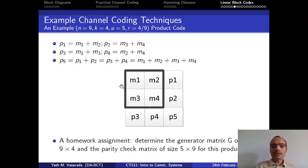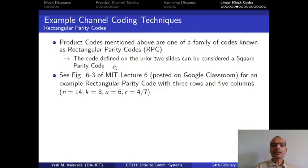Now you can imagine that this is not necessarily the only way that you can do this type of product encoding. You can make this to be, instead of a perfect square, you can make this to be a rectangle and then do essentially the same thing.